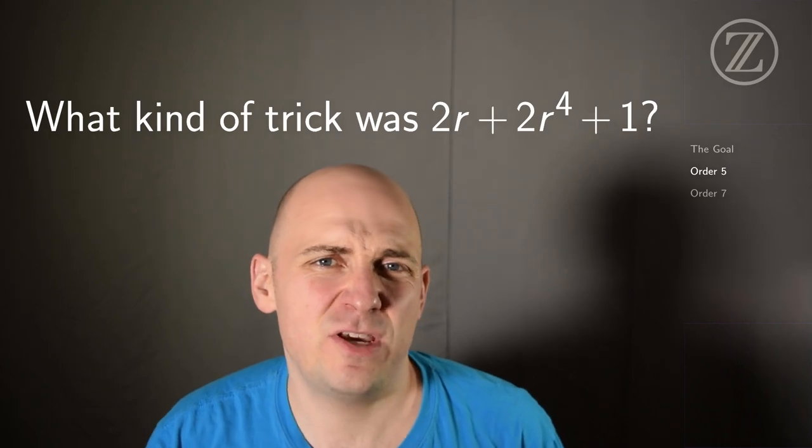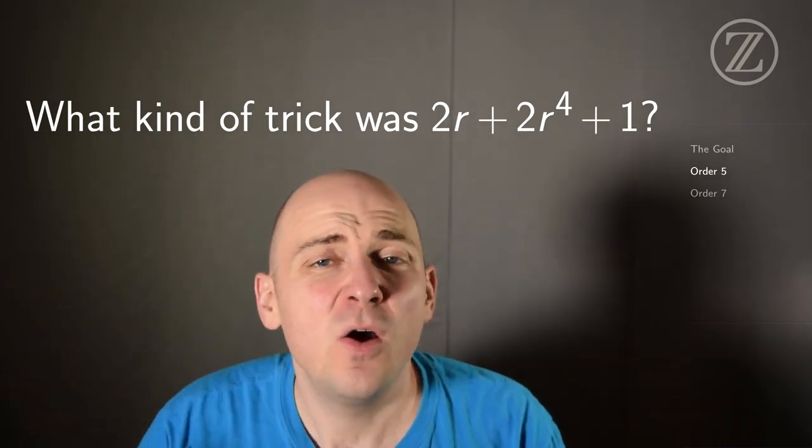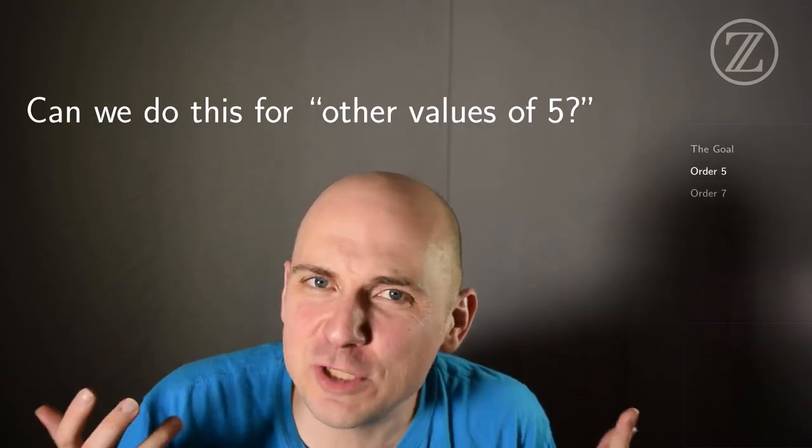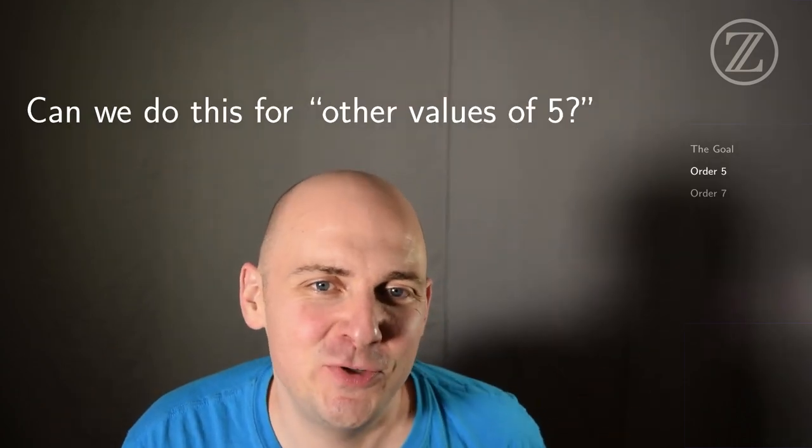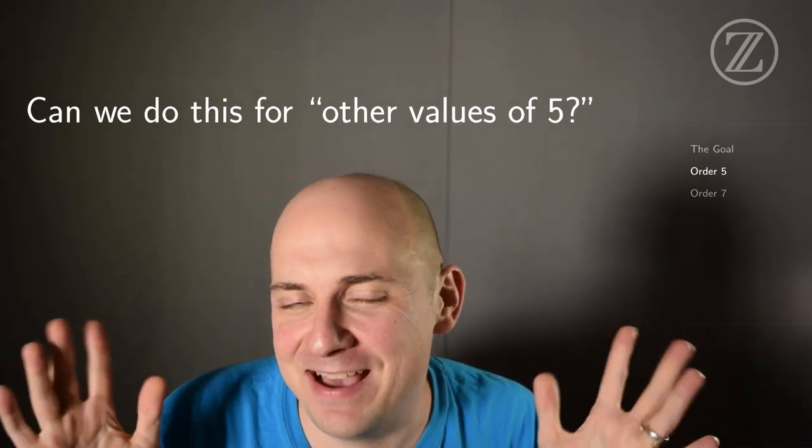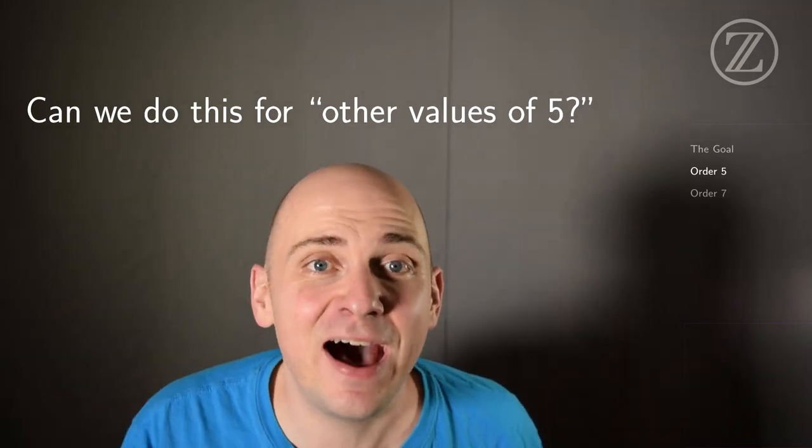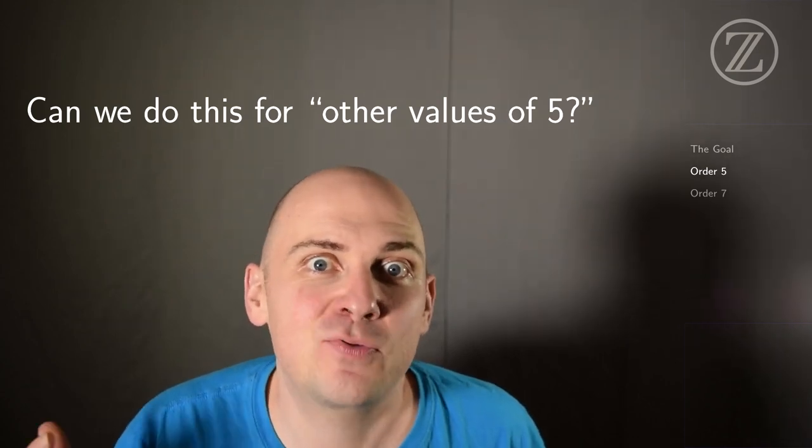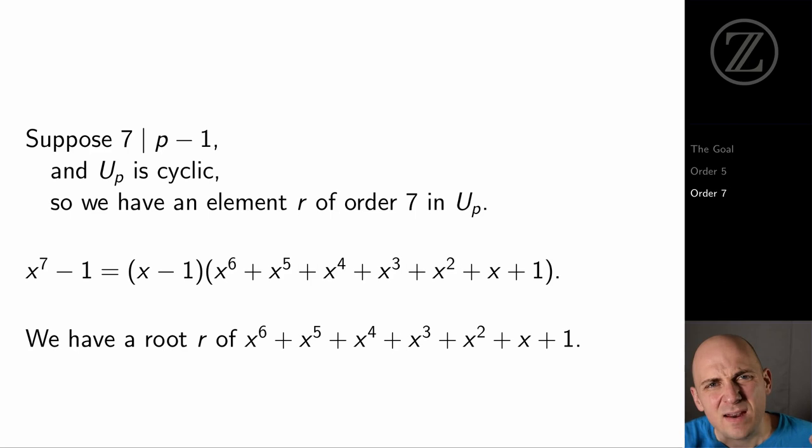What are the primes with that property? Well, here's another thing that should freak you out. What kind of trick was 2r plus 2r to the fourth plus 1? Where did that thing come from? So in the quest for generalization, what we'd like to be able to do is to repeat this story for a different value of 5, as they say. I'd like to replace 5 in the preceding story with some other number and see if I can make any kind of progress. So I'm going to play that same kind of game, but instead of doing it with 5, I'm going to do it with 7.